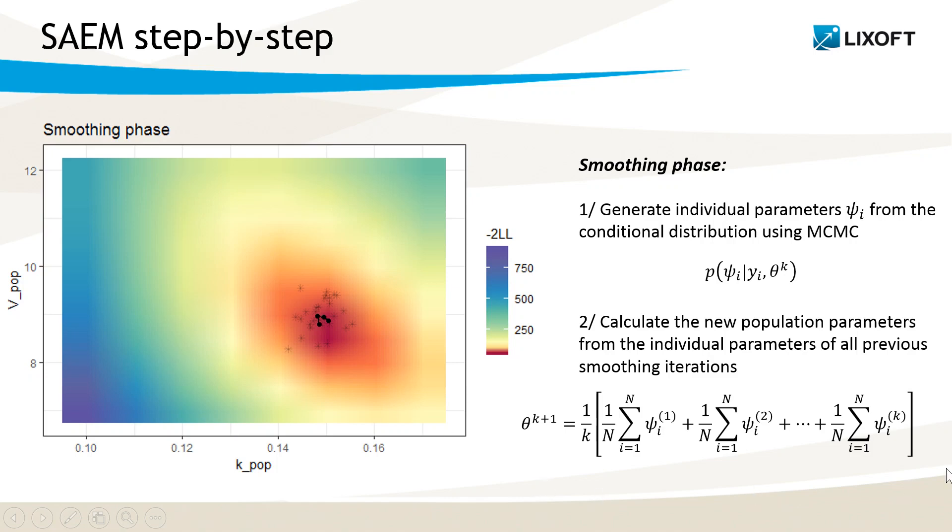This requires memorizing all individual parameters. But in fact, we can see that this part here of the formula is exactly what I would have used to calculate theta k, so the theta at the previous iteration.